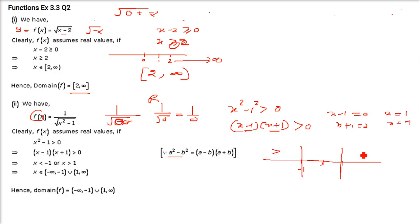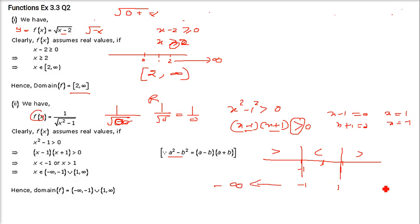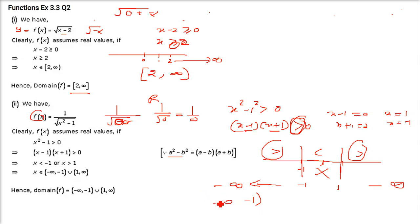So we have 3 partitions on the number line. The outer sides satisfy the greater than condition, while the middle region between minus 1 and 1 does not. Since we need strictly greater than 0, we only consider the outer regions: minus infinity to minus 1, and 1 to infinity. Minus 1 is not included — no equal sign — so we use a round bracket. Similarly for 1. Infinity always gets a round bracket.